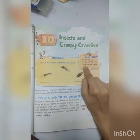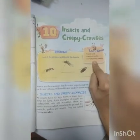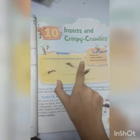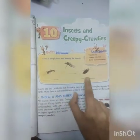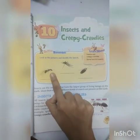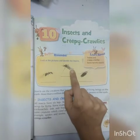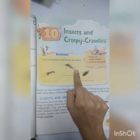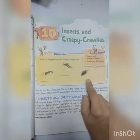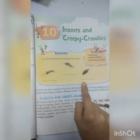Insects and creepy crawlies — some harmful insects and some insects that can harm them. Look at the picture and identify the insects. This is an ant — you have to write 'ant' here. This is a mosquito, M-O-S-Q-U-I-T-O. Then this is a cockroach, C-O-C-K-R-O-A-C-H. You have to write these three names of insects.